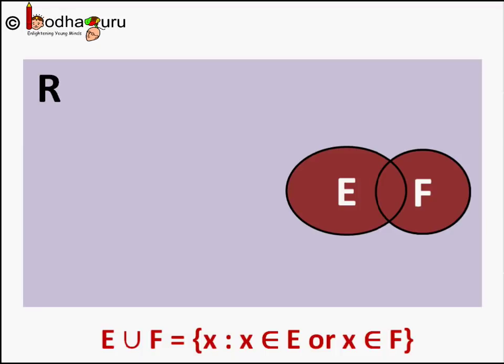E union F is equal to set of elements X such that X belongs to E or X belongs to F.